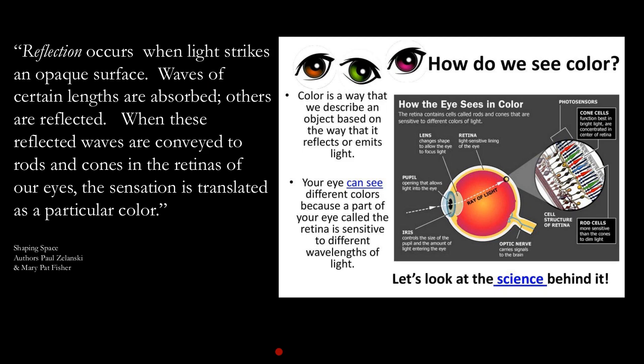Light goes in, goes through a spectrum, and then comes out in different colors — all those colors of a rainbow. Reflection occurs when light strikes an opaque surface. Waves of certain lengths are absorbed; others are reflected. When these reflected waves are conveyed to rods and cones in the retina of our eyes, the sensation is transmitted as a particular color. Color is a way that we describe an object based on the way it reflects or emanates light.